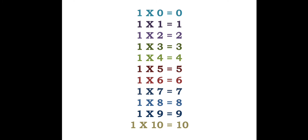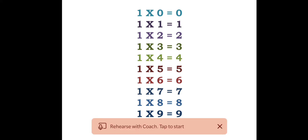Let's repeat it once again. 1 0s are 0, 1 1s are 1, 1 2s are 2, 1 3s are 3, 1 4s are 4,